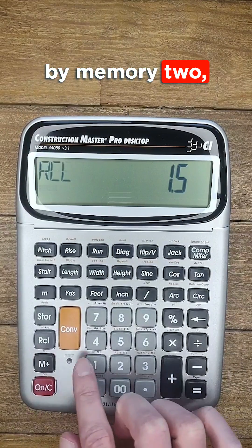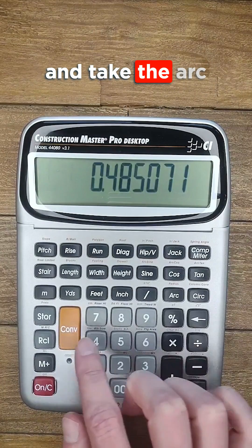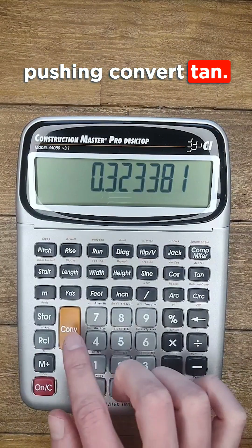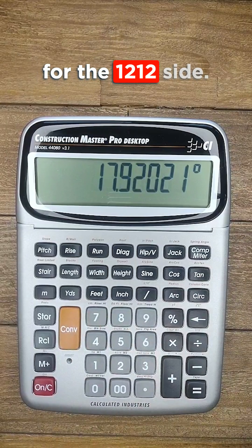Divide memory 1 by memory 2 and take the arc tan of that value by pushing convert tan. And there's my backing angle for the 12-12 side.